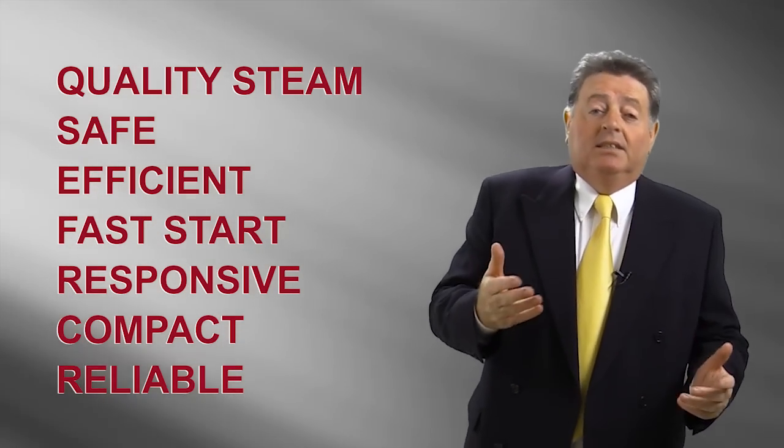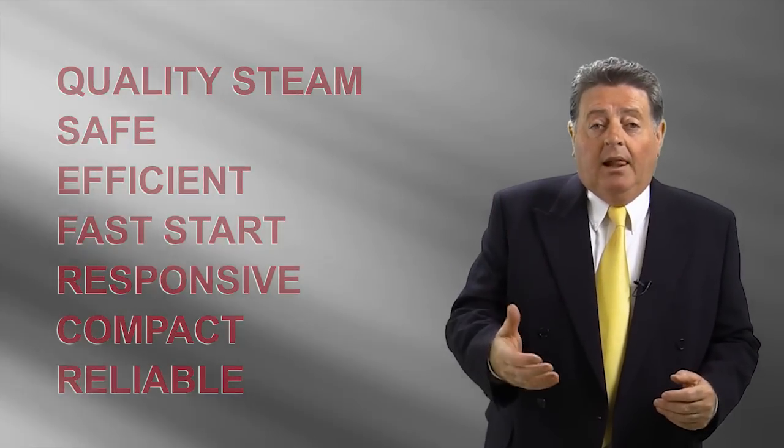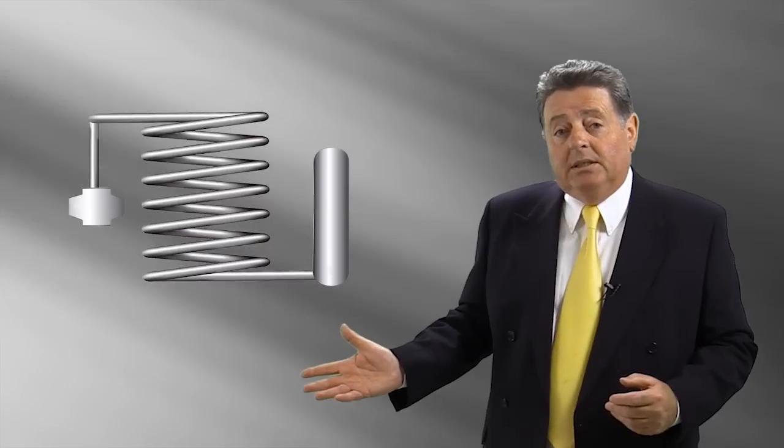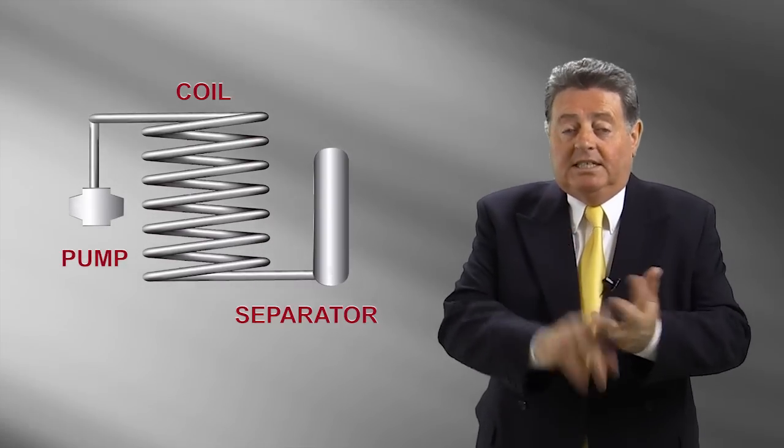So where do all these advantages come from? Like all good designs the answer is simple. The Clayton Steam Generator uses only three main components: a special pump, a special coil and a special steam separator.